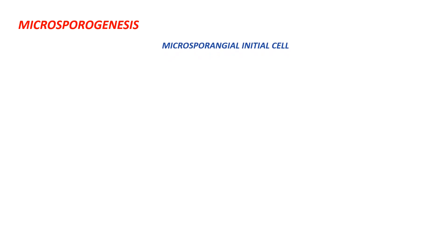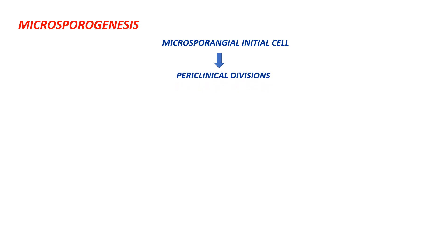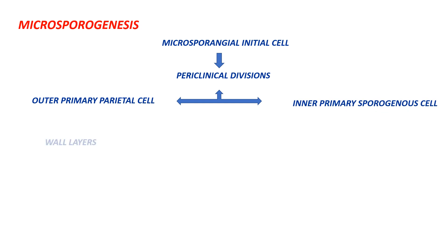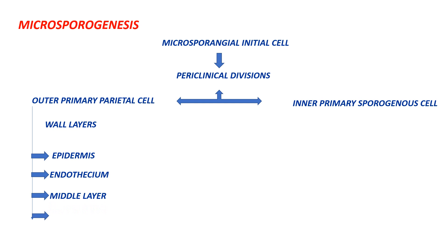In microsporogenesis, microspores form in the microsporangium. The archesporial cell undergoes periclinal divisions — divisions parallel to the tissue surface — giving rise to the outer primary parietal cell and the inner primary sporogenous cell. The outer primary parietal cell undergoes several divisions forming wall layers: epidermis, endothecium, middle layer, and tapetum. The three outer layers provide protection and help in anther dehiscence, while the tapetum provides nourishment to the pollen grains.